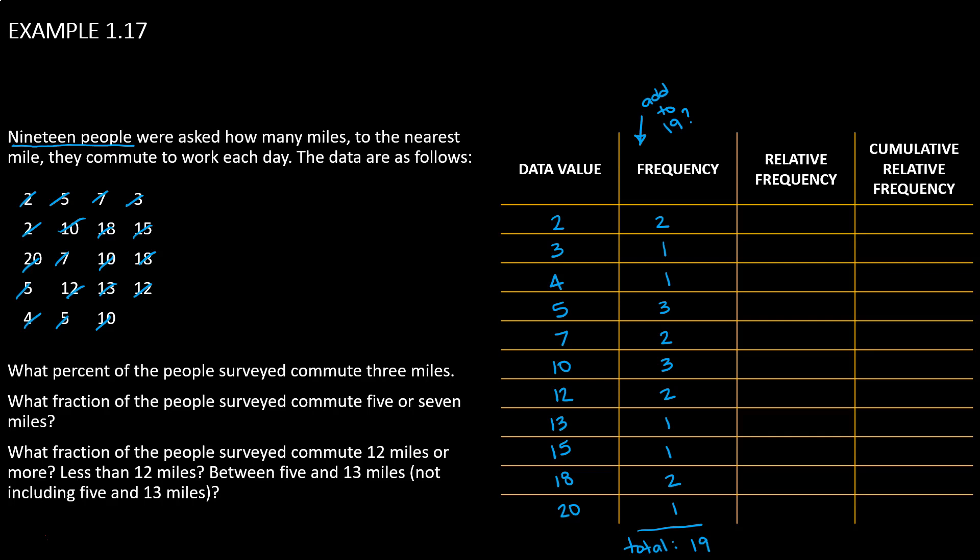Next, we can build our relative frequency. Remember that we're going to use our total for the number of surveyed people, 19, as the denominator in our relative frequency fraction, and the frequency for each data value as the numerator.